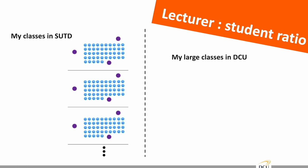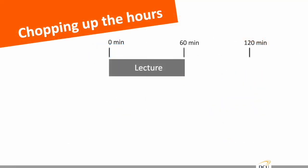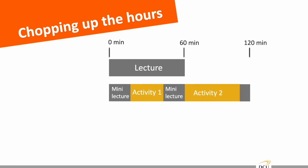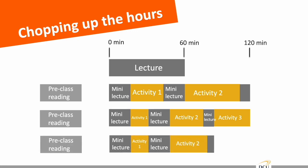Instead of having a large number of students in one classroom, they divide into multiple classrooms with a maximum of 45 students each, and two or three lecturers co-teaching in each classroom. Whereas in large classes at DCU, I was the only lecturer with one teaching assistant. Instead of a solid one-hour lecture, the duration was typically two hours with multiple activities. Students had to do pre-class reading beforehand, and sometimes there were two or three activities in that duration.